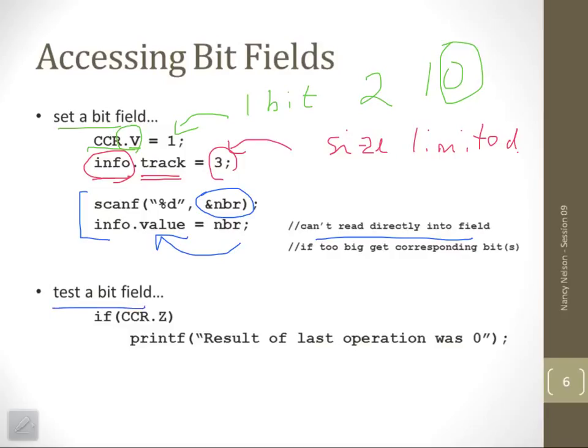If we want to test a bit field, we could say if CCR.Z. Remember that is looking for a true test. Then we're going to print the result of the last operation was 0. So if CCR.Z is set, in other words it's non-zero, it's going to print the result of the last operation was 0.